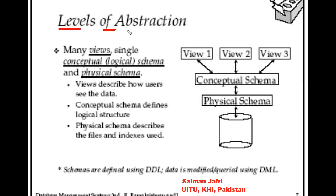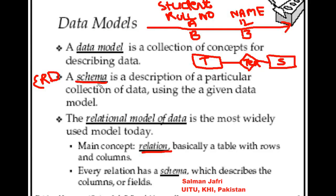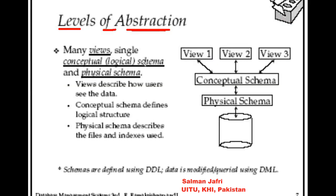Then we have the levels of abstraction of a database. The lowest level is the physical schema, which deals with how the data would be stored and accessed. Based on that we have the conceptual schema, which defines the logical structure — for example the diagram discussing Teacher and Students is a logical schema. On top of that we can have views, which can combine conceptual schemas. This is basically how the levels of abstraction are organized in a database.